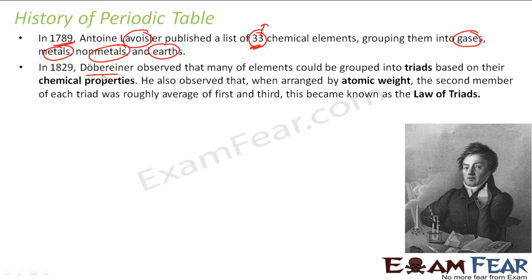Then this guy Döbereiner — what he did was he grouped the elements into triads based on their chemical properties. He observed that the atomic mass of the middle element is equal to the mean of the first and last. So he tried to group these elements based on atomic weight. This was the first grouping based on atomic weight.